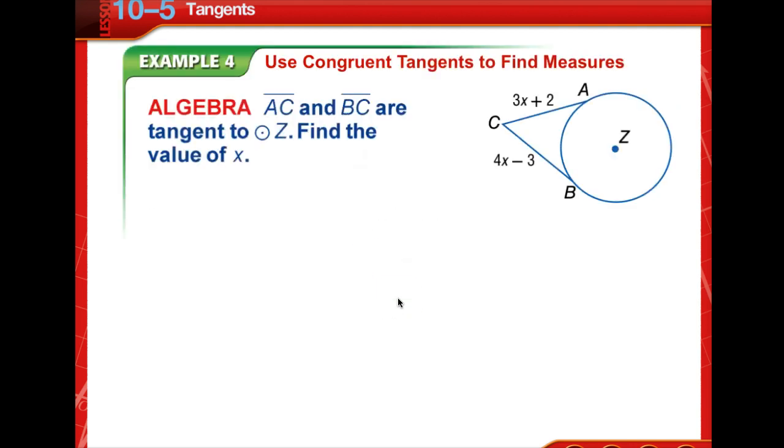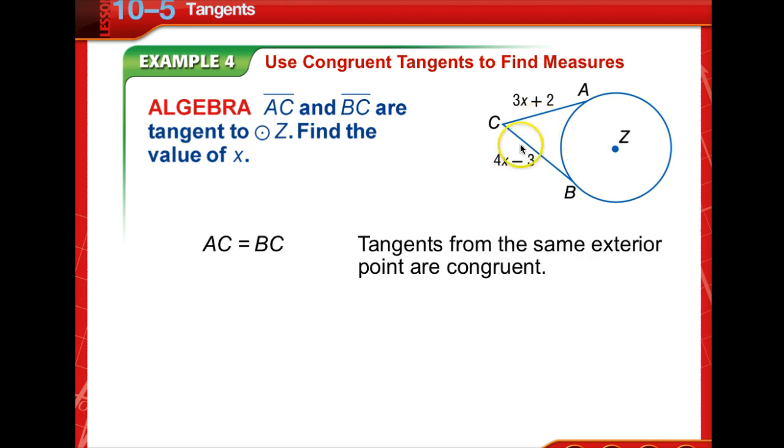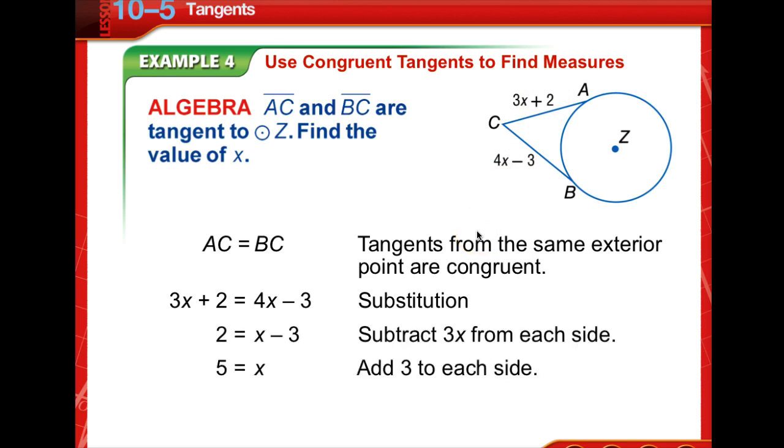In example four, we're going to use congruent tangents to find measures. Segment AC and segment BC are tangent to circle Z. We're to find the value of X. Well, we know that AC is equal to BC. Tangents from the same exterior point are congruent. So we're going to substitute in these values and simply solve for X. So X is equal to 5.